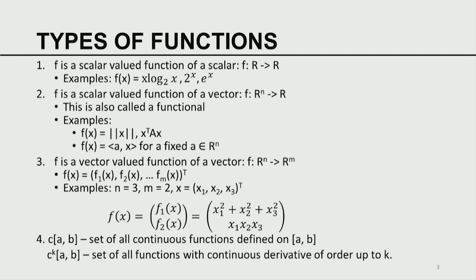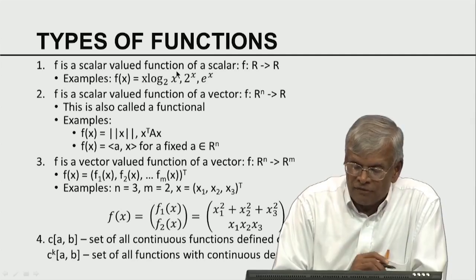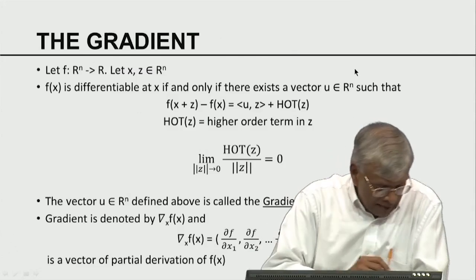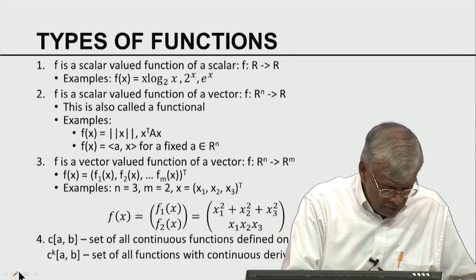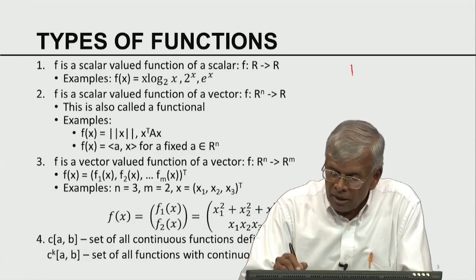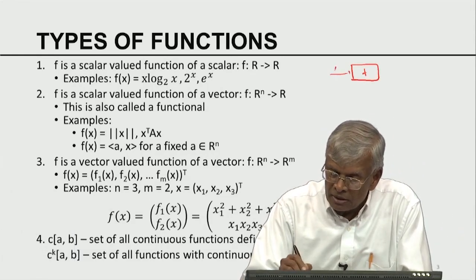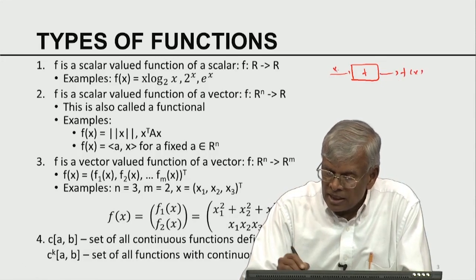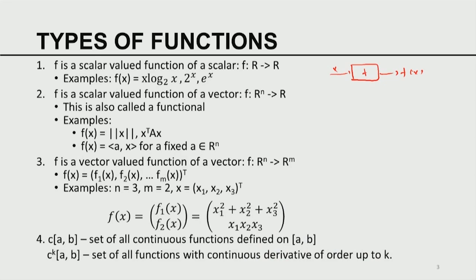Now I am going to talk about other classifications of functions. F is a scalar-valued function of a scalar. Here is a black box: x goes in, F of x comes out, x is a scalar, F of x is a scalar. That is what is called a scalar-valued function. The domain is real and the co-domain is real. Examples include: x log x, 2 to the power x, e to the x. These are all scalar-valued functions of a scalar — input is a scalar, output is a scalar.